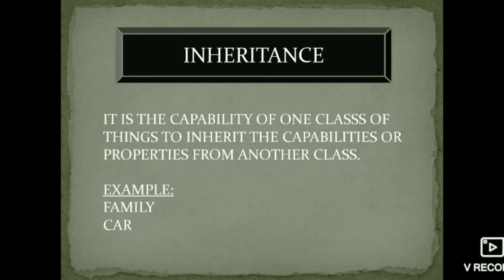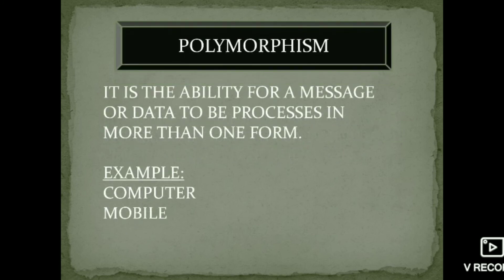Next is inheritance — a very popular concept. It is the capability of one class to inherit properties from another class. For example, a car brand and family relationship illustrates inheritance. Inheritance consists of a base class and a derived class. Next is polymorphism — 'poly' means many and 'morphism' means forms, so it means many forms. Data that can be processed in more than one form is called polymorphism.